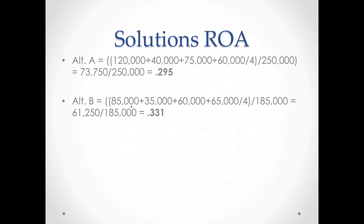ROA is easy to calculate. We take the average of our cash flows — add all four and divide by the number of years. For Alternative A: ($120,000 + $40,000 + $75,000 + $60,000) divided by 4 equals $73,750, divided by the $250,000 initial investment gives 0.295. For Alternative B the average is $61,250, divided by the initial investment gives 0.331. Since 0.331 is larger than 0.295, we choose Alternative B — a higher ROA means higher average cash flows relative to investment.